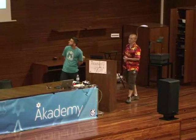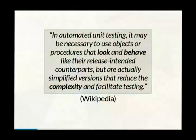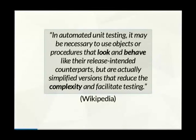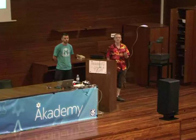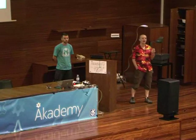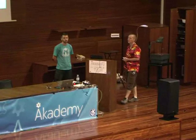Before that, we'll have a definition which I extracted from Wikipedia. In automated unit testing, it may be necessary to use objects or procedures that look and behave like their release-intended counterparts, but are actually simplified versions that reduce the complexity and facilitate testing. I think those are really the three main characteristics of test doubles: they have to look like the original, they have to behave almost like the original, and then it's a question of complexity inside of your test which will guide you into picking one of the different types.